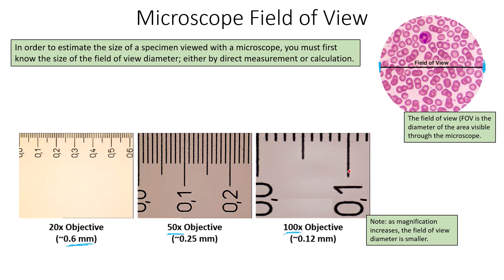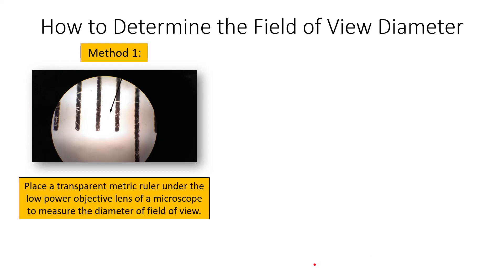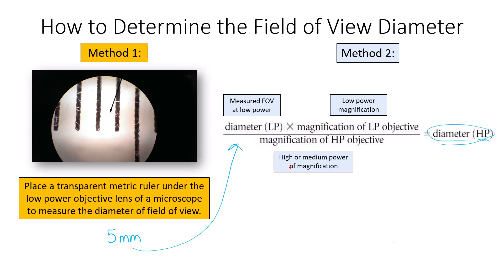There are two methods to determine the field of view diameter. Method one: place a transparent metric ruler under the low-power objective and physically measure the diameter — for example, counting millimeter marks to get a measurement like 5 mm. Method two: use an equation where the low-power measured diameter and low-power magnification are used to calculate the diameter at higher magnifications.